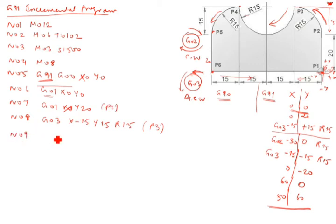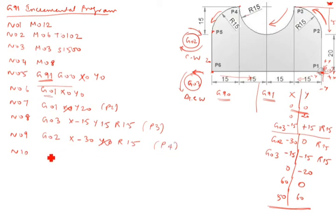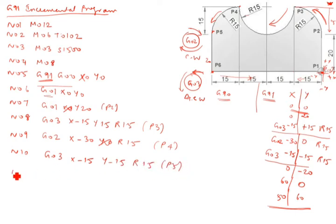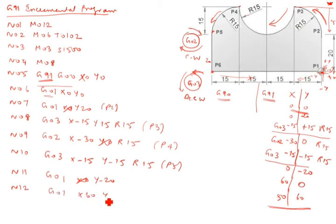N09: Z02, X minus 30 — Y0 no need to write. This is P4. N10: Z03, X minus 15, Y minus 15, R15 — this is P5. N11: Z01, Y minus 20 — X0 no need to write. N12: Z01, X60 — Y0 no need to write.